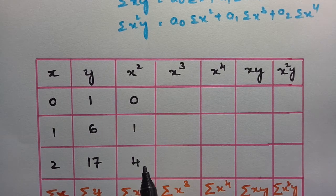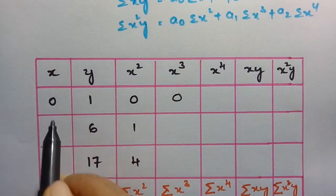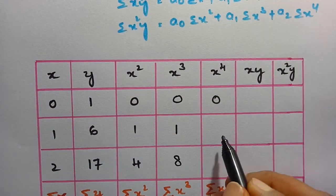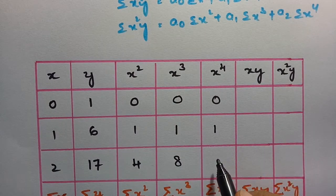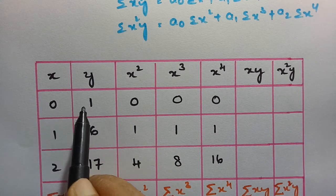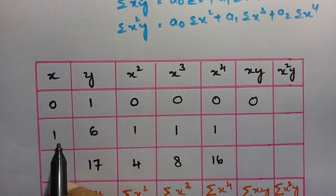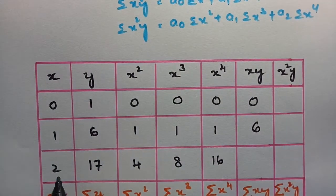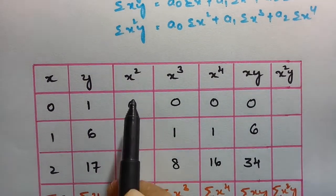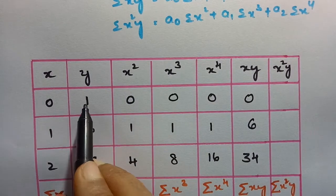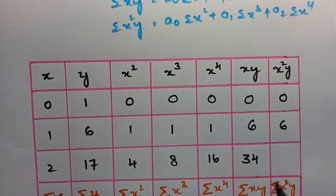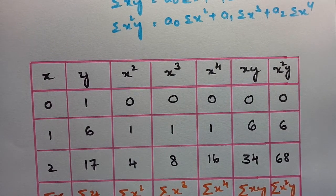Next, x³: 0³ = 0, 1³ = 1, and 2³ = 8. For x⁴: 0⁴ = 0, 1⁴ = 1, and 2⁴ = 16. For xy, multiply x and y: 0×1 = 0, 1×6 = 6, and 2×17 = 34. For x²y, multiply x² by y: 0×1 = 0, 1×6 = 6, and 4×17 = 68.